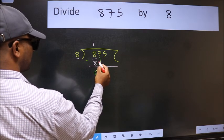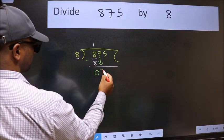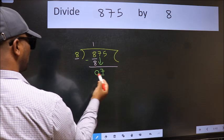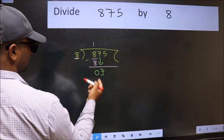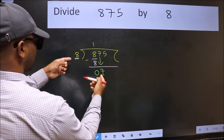After this, bring down the beside number. So 7 down. Now here we have 7 and here 8. 7 is smaller than 8.